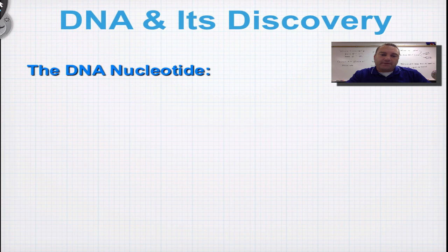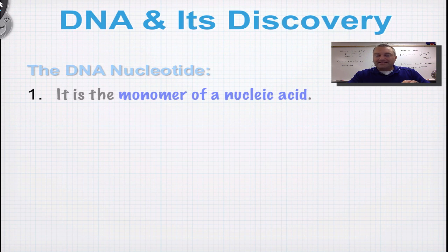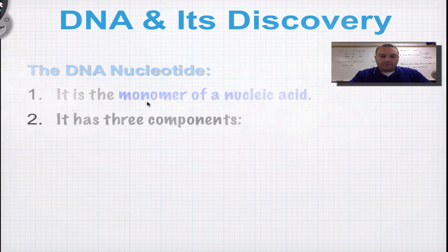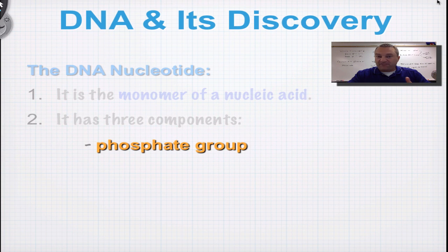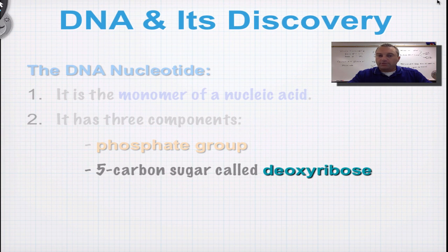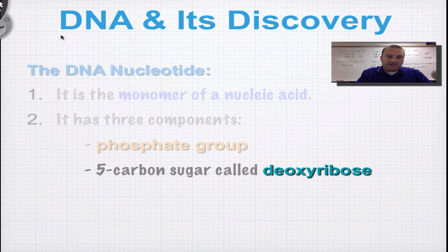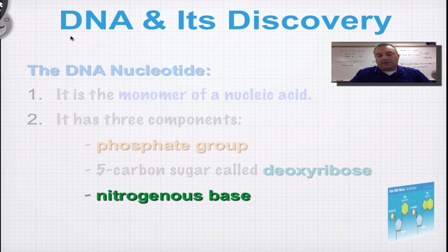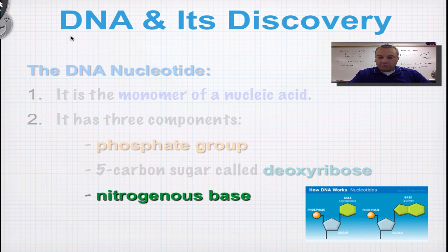The DNA nucleotide — if you can remember from Chapter 2, the DNA nucleotide is the monomer of a nucleic acid, and a monomer is the basic unit of a biomolecule. The DNA nucleotide has three components: a phosphate group, a five-carbon sugar — and in this case, the five-carbon sugar is called deoxyribose, which is actually the 'D' in DNA — and it's also going to have a nitrogenous base.